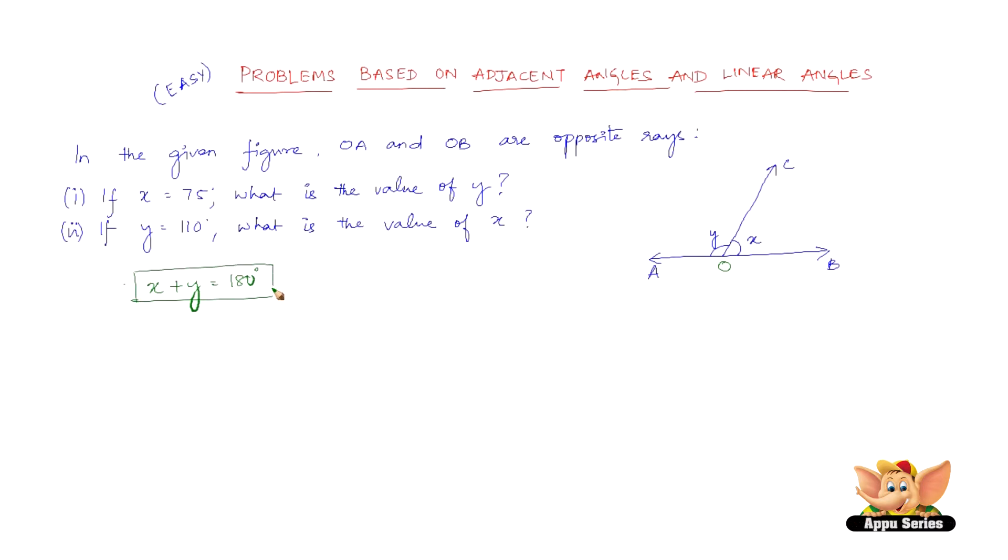This is the major equation that we have to form once we see the figure because we already know that angles on opposite rays or angles on a straight line add up to 180 degrees. So x plus y equals 180 degrees.